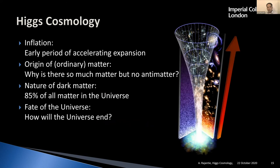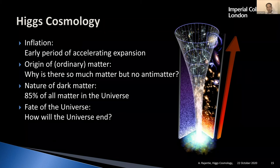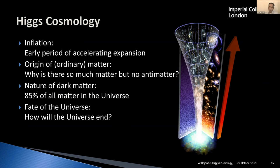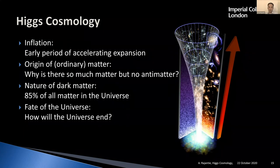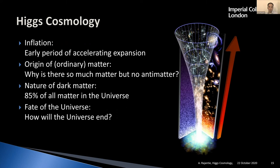Higgs cosmology means taking the standard model — the minimal theory, just the standard model — and seeing what it predicts, then comparing that with observations to see if cosmological observations give any new hints about new physics that might be needed. I call it Higgs cosmology rather than standard model cosmology because the Higgs field is in many ways the most important and most interesting part of the standard model. It plays a central role in many different phenomena in the early universe and can potentially answer many of the big puzzles we have about the universe.